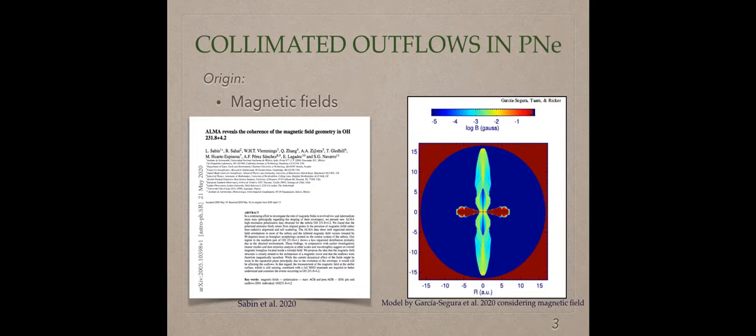However, in the recent paper from this year, 2020, García Segura built other models using magnetic fields, and they found that the magnetic field can produce bipolar planetary nebulae. This revives the idea that magnetic fields are a precursor of bipolar planetary nebulae. In the image that you observe in this slide, this is the result of the model of García Segura in his recent paper. You can observe the bipolarity of this model.